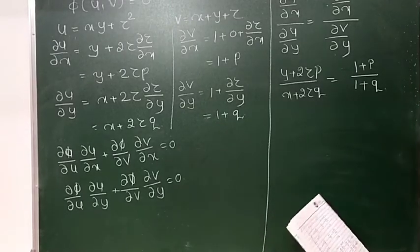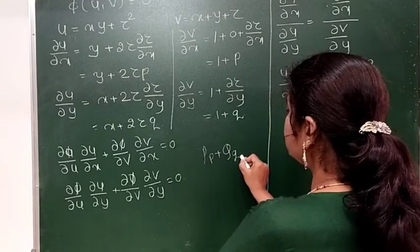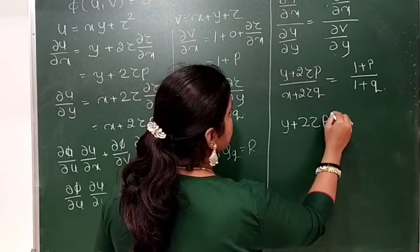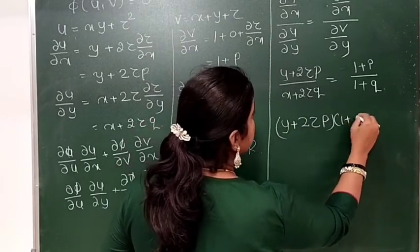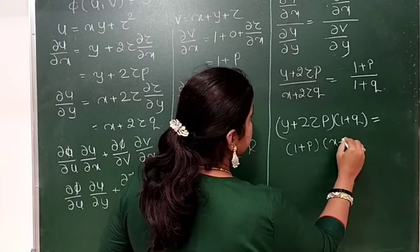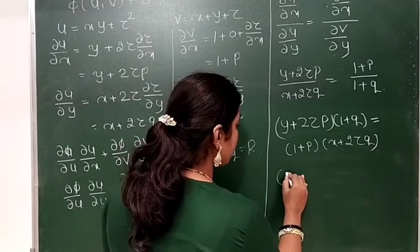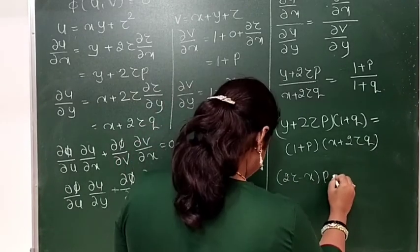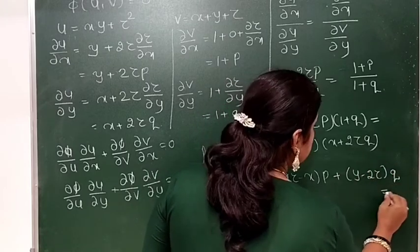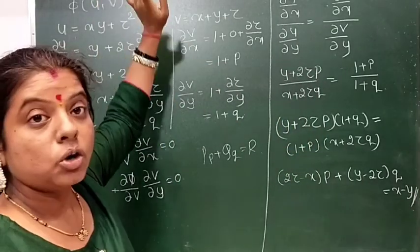Now you have to cross multiply the terms and write in the form pp plus qq equals r. That is, (y plus 2z times p) multiplied by (1 plus q) equals (1 plus p) multiplied by (x plus 2z times q). Simplifying, you get (2z minus x)p plus (y minus 2z)q equals x minus y. This is how you solve whenever you have two functions.